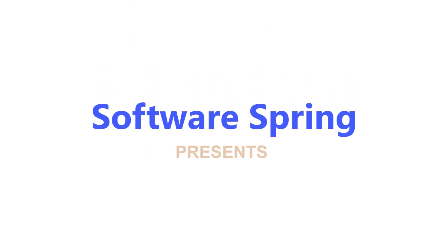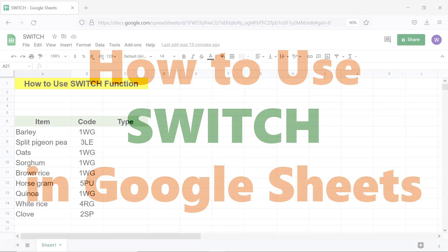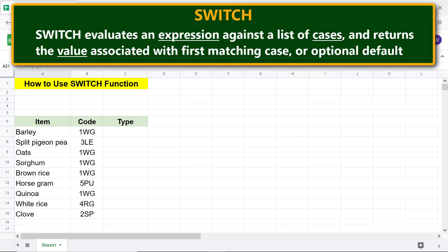Software Spring presents how to use SWITCH in Google Sheets. Hi folks, greetings, welcome to this tutorial on using the SWITCH function. Let's look at an intro to SWITCH. SWITCH evaluates an expression against a list of cases and returns the value associated with the first matching case or optional default.